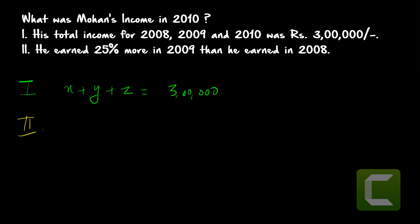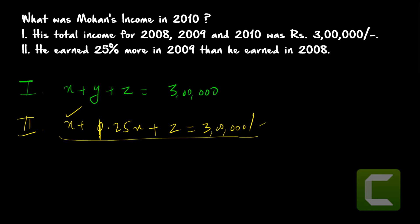The second statement says he earned 25% more in 2009 than in 2008, so we can write x + 0.25x + z = 3 lakh, giving 1.25x + z = 3 lakh. However, we don't know x, so we can't find z. There is only one equation with two unknown variables. To solve for two unknowns we need two equations, so we cannot find Mohan's income in 2010. The answer is option E — neither statement is sufficient.